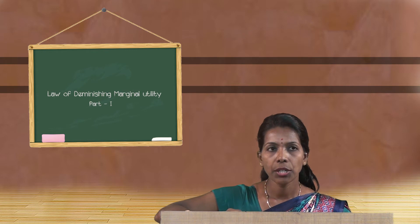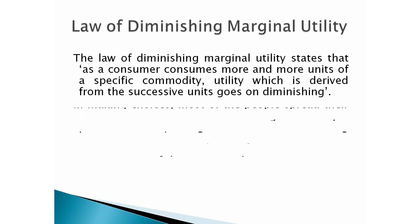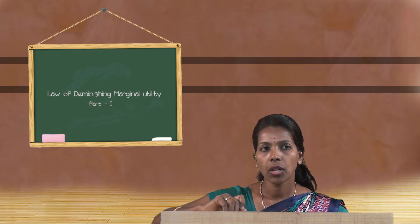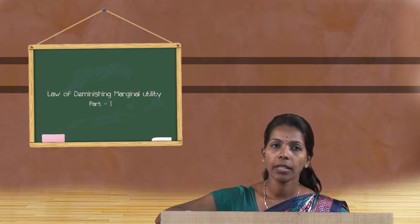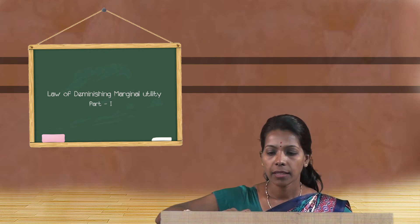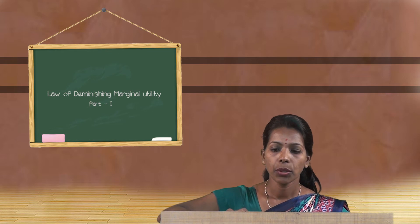The Law of Diminishing Marginal Utility states that as a consumer consumes more and more units of a specific commodity, the utility derived from successive units goes on diminishing. In making choices, most people spread their incomes over different kinds of goods. People prefer a variety of goods because more and more of any one good reduces the marginal satisfaction derived from further consumption of the same good. This law expresses an important relationship between utility and the quantity consumed of a commodity.